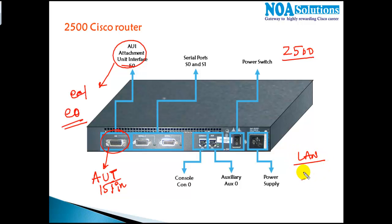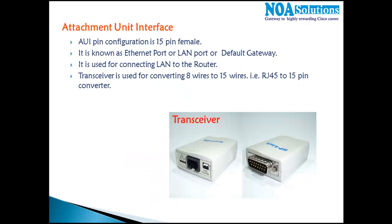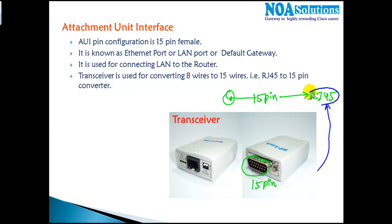In the LAN we use RJ45 connectors for cabling, so to connect an AUI router to a switch you need a converter called a transceiver. On one side of the transceiver is a 15-pin connector that plugs into the router, and on the other side is an RJ45 port where you plug in the cable. That's how Ethernet connection is provided on older 1500 or 2500 series routers.